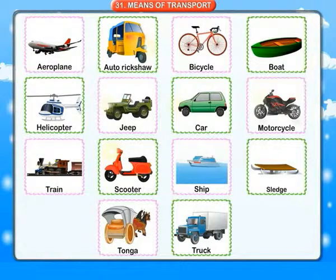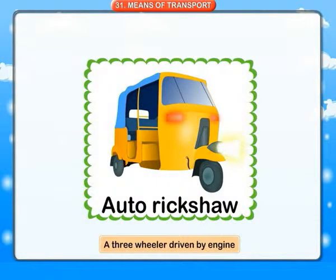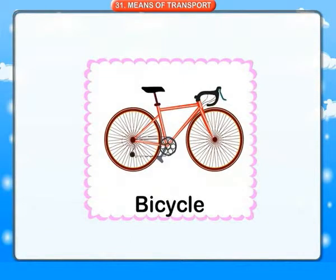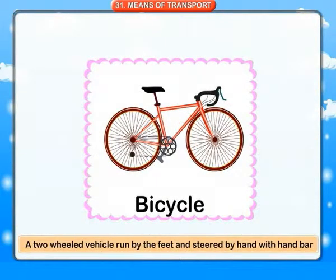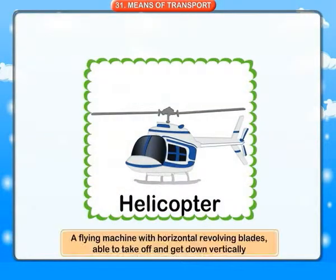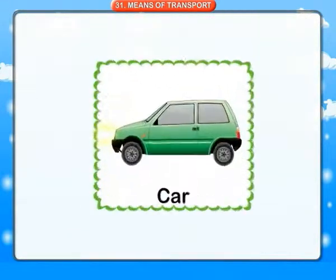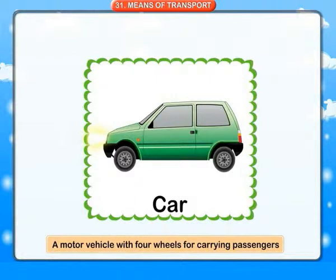Means of transport. Aeroplane: an aircraft that is heavier than air, with wings and one or more engines. Auto rickshaw: a three-wheeler driven by an engine. Bicycle: a two-wheeled vehicle run by the feet and steered by hand with a handlebar. Boat: a small water vessel moved by oars, sails or motor. Helicopter: a flying machine with horizontal revolving blades able to take off and land vertically. Jeep: a small utility motor vehicle with four wheels. Car: a motor vehicle with four wheels for carrying passengers.